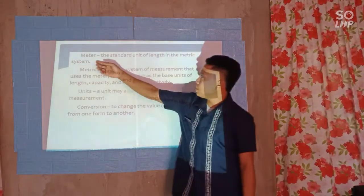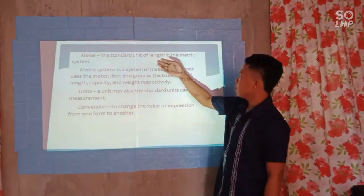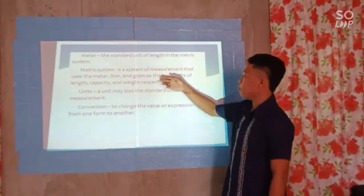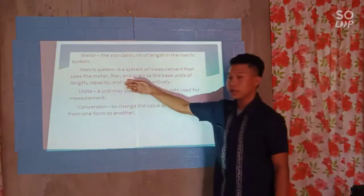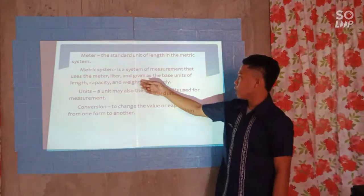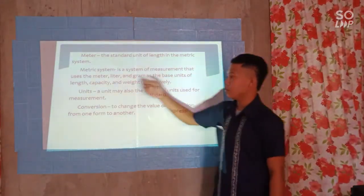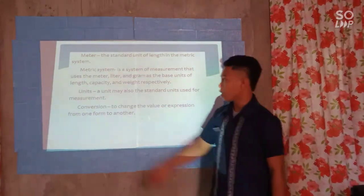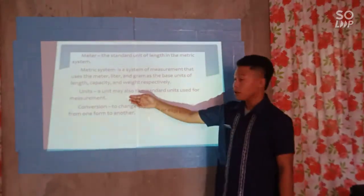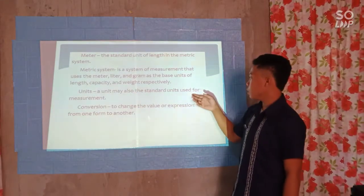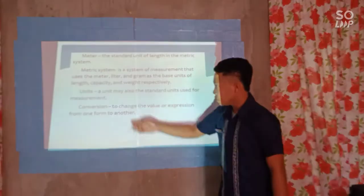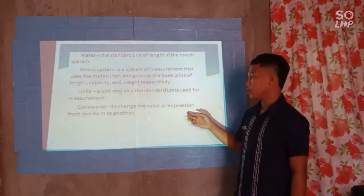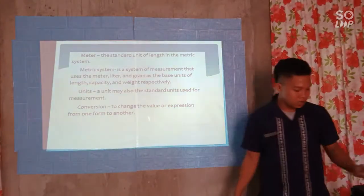Meter is the standard unit of length in the metric system. The metric system is a system of measurement that uses the meter, liter, and gram as the base units of length, capacity, and weight respectively. A unit is the standard unit used for measurement. Conversion is to change the value or expression from one form to another.